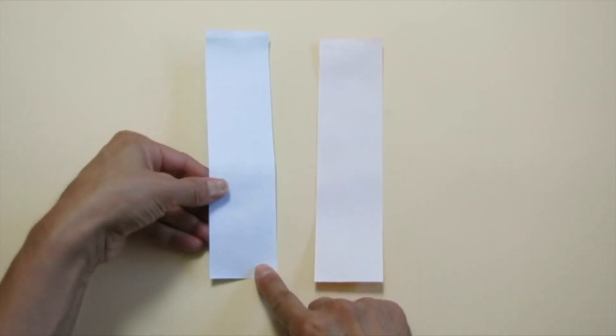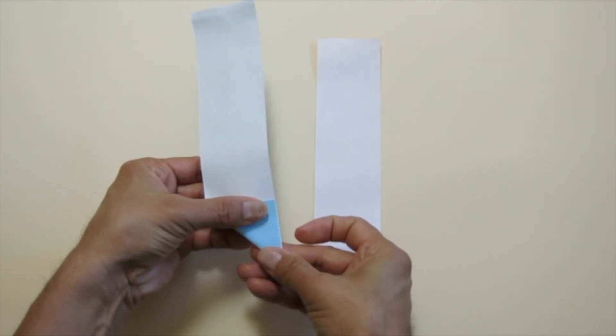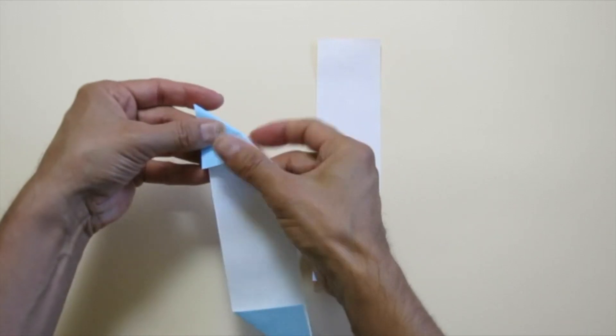Start with the left strip. Bring the bottom to the right edge. Make a valley fold. Bring the top to the left edge. Make a valley fold.